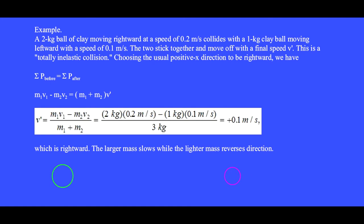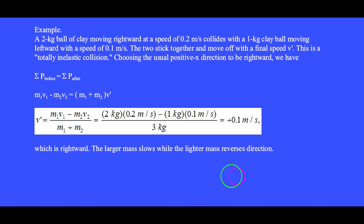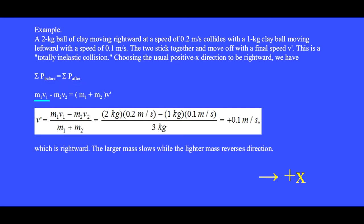A 2 kg lump of clay moving rightward at 0.2 meters per second collides with a 1 kg lump of clay moving leftward at 0.1 meters per second. The two collide and stick together and move off with a final speed v-prime. This is a totally inelastic collision — the code word in homework problems meaning the two masses stick together. Choosing the positive x direction as rightward, the sum of momentums before equals the sum after the collision.